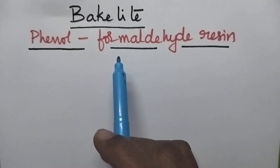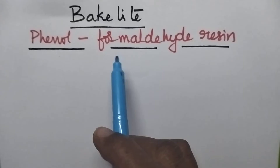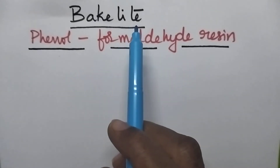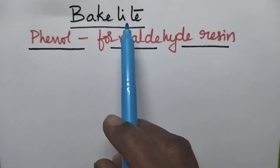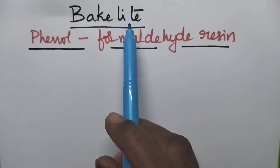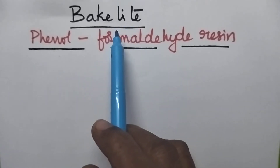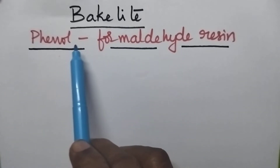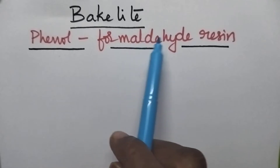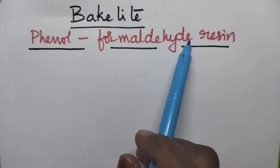Hello students, welcome back to my channel. In this video I am going to discuss in detail about the preparation, properties and applications of Bakelite. Bakelite is a thermoset plastic which is also known as phenol formaldehyde resin.